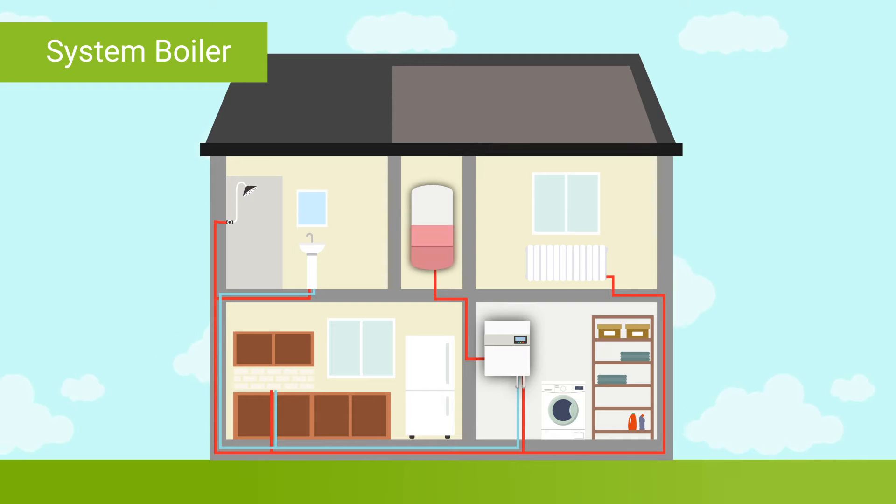The cylinder stores a large supply of hot water and keeps it warm for distribution to your taps and showers. This allows a system boiler to provide ample hot running water and central heating to properties that are too big for a combi to handle.